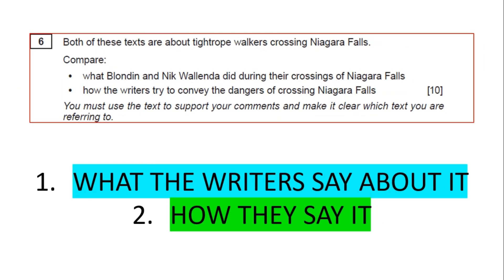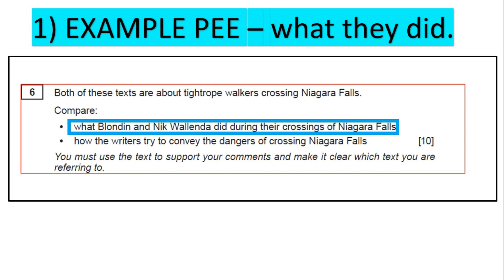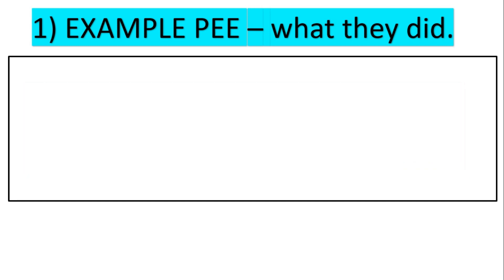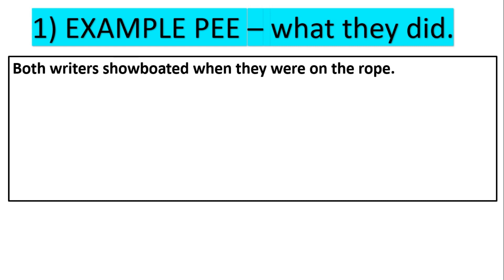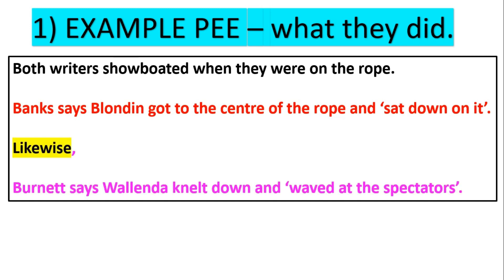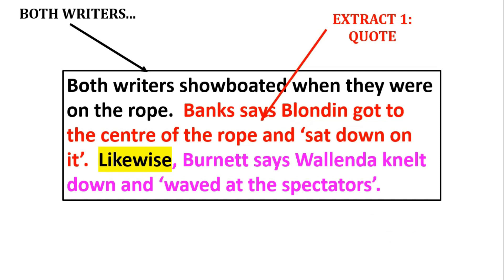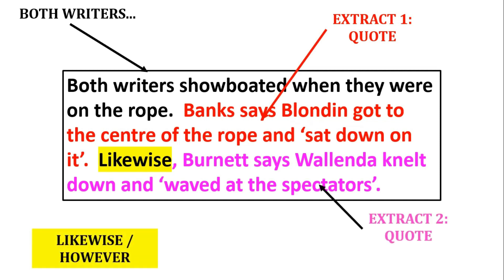Let's look at a number one example PEE on the first bullet point — what Blondin and Wallander did during the crossings of Niagara Falls. My point is: 'Both writers showboated' — meaning both tightrope walkers performed on the rope. Then I've put: Banks says 'Blondin got to the center of rope and sat down on it.' Then: 'Likewise, Burnett says Wallander knelt down and waved at the spectators.' This bullet point is just about what they did, so I'm not really examining the quote — I've made a point and written both quotes to back it up: both writers, extract one quote, then extract two quote with 'likewise.'